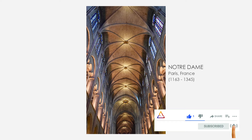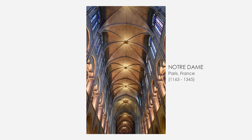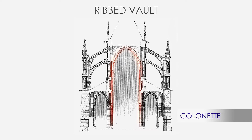Furthermore, Gothic builders designed a new and lighter kind of rib vault that allowed distributing the weight of the roof both downwards and outwards — not just downwards like in barrel vaults. While some ribs go downwards as colonnets and are bundled into pillars on the ground floor, other ribs carry the thrust outwards to the walls.